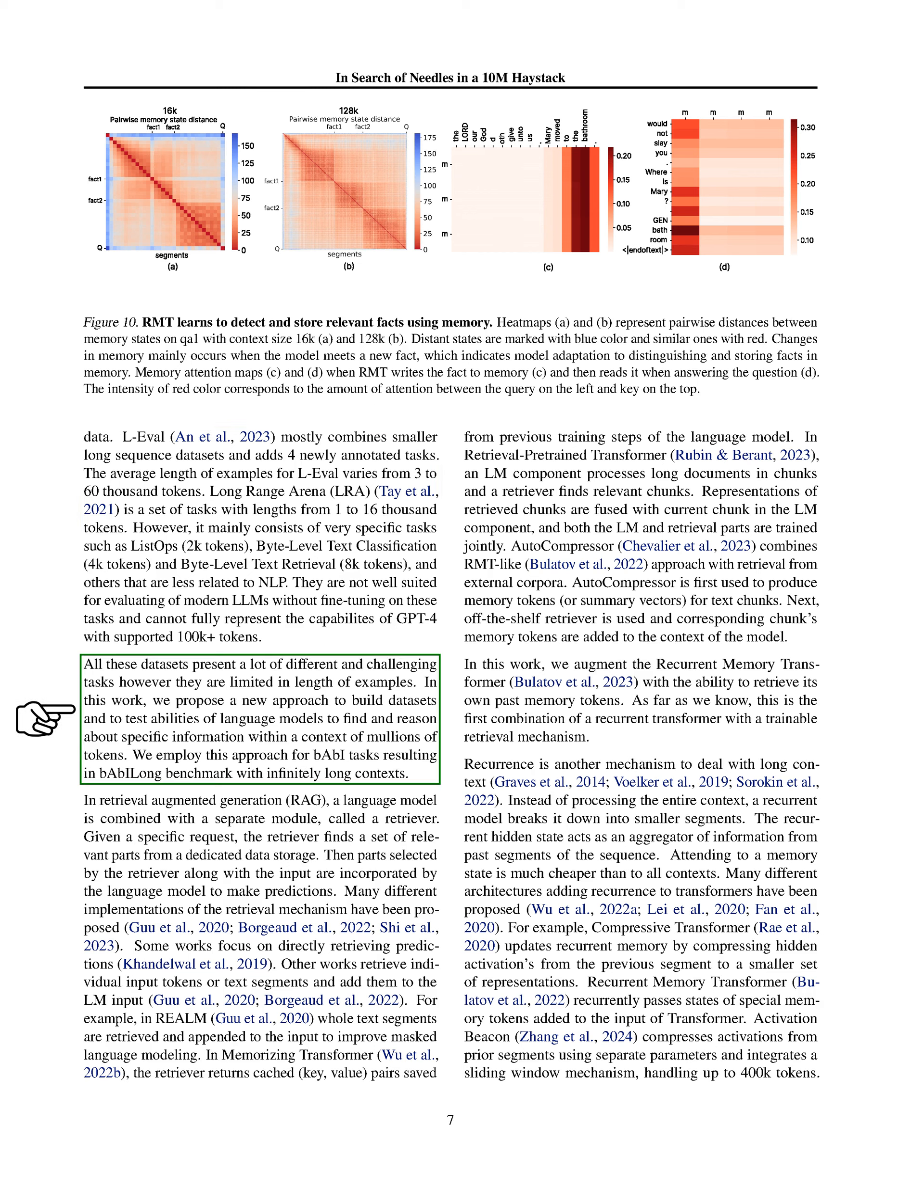We propose a new approach for building datasets and testing language models' abilities to find and reason about specific information within contexts of millions of tokens. We apply this approach to the Bobby tasks, resulting in the BABi-Long benchmark, which features infinitely long contexts. In addition to dataset development, we explore the concept of retrieval augmented generation (RAG), where a language model is enhanced with a retrieval module. This module selects relevant parts from a data storage based on a given request, and these parts are then incorporated into the model's input for making predictions. Various implementations of this retrieval mechanism have been proposed, ranging from retrieving predictions directly to adding retrieved input tokens or text segments to the language model's input. For instance, REALM appends whole text segments to improve masked language modeling, while the memorizing transformer and retrieval pre-trained transformer use different strategies to incorporate retrieved information into the model's processing.